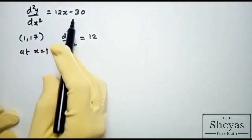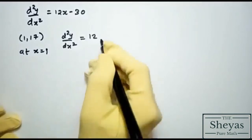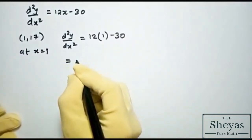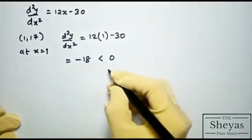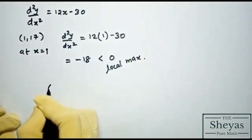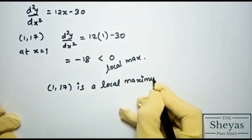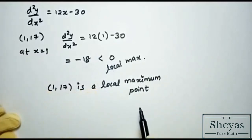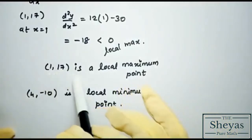For the next stationary point (1, 17): at x = 1, d²y/dx² = 12(1) − 30 = −18, which is less than 0. Since the second derivative is less than 0, we conclude that (1, 17) is a local maximum point.